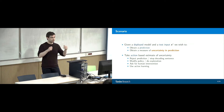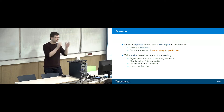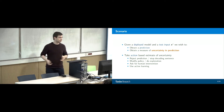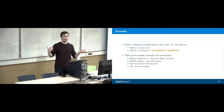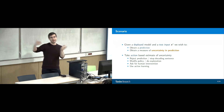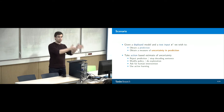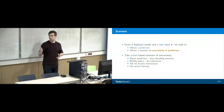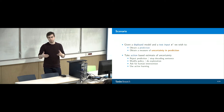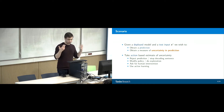The scenario of deployment is: we have a model, it gets an input X, makes a prediction, and we also get measures of uncertainty in that prediction. Then we'd like to take some action based on those measures — reject the prediction, accept it, ask for human intervention, ask a human driver to take over driving, or invite a human doctor. This is the use case.